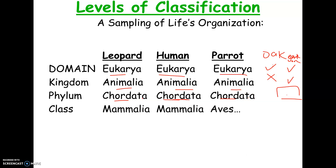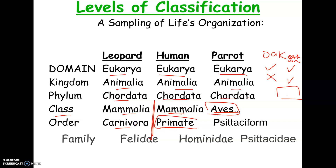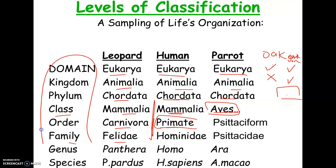Going further down, at the class level, humans and leopards are both mammals, but the parrot belongs to class Aves — birds have feathers, beaks, and hollow bones, while mammals have fur and nurse young. The leopard and human split apart at the order level. A chimpanzee would be in the same order as humans, making it more closely related to us than the leopard. You need to know these levels in order from most general to most specific: Domain, Kingdom, Phylum, Class, Order, Family, Genus, Species — a mnemonic is 'Dear Kevin, please come over for good spaghetti.'